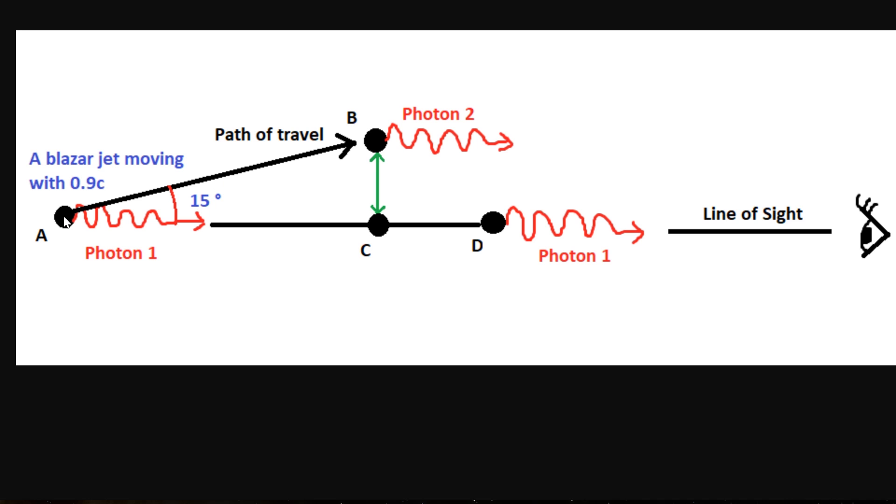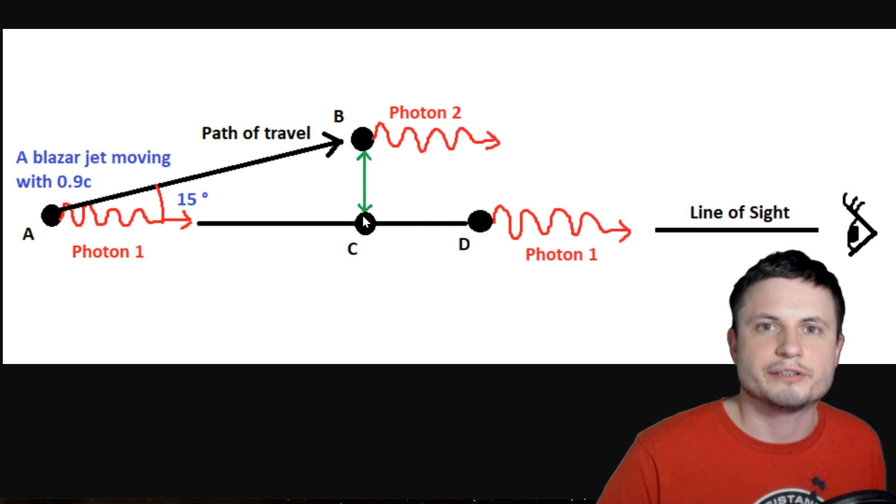But what about this distance here? Well, by using trigonometry, we can actually calculate this by taking this distance and subtracting this multiplied by cosine of 15. So essentially, it's going to be 100 minus 90 multiplied by cosine of 15,